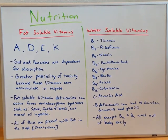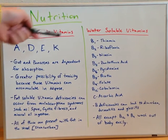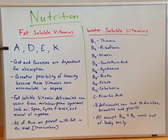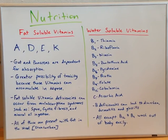Today, we will begin a new section on nutrition in biochemistry, starting with the basics of vitamins. Vitamins can be split up into fat-soluble and water-soluble vitamins. The fat-soluble vitamins are vitamins A, D, E, and K.